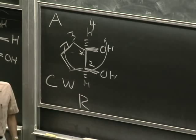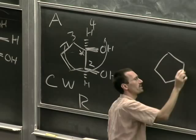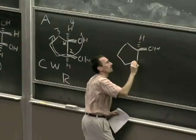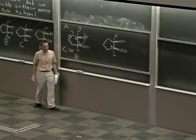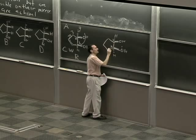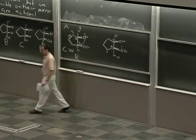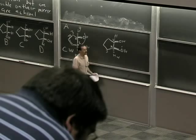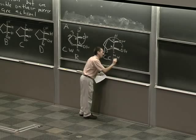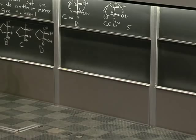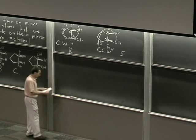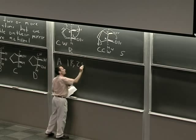Now for the other stereocenter: one for the oxygen, two for this carbon, three for this carbon, four for the hydrogen. We're sighting down the bond to the hydrogen — going 1, 2, 3 is counterclockwise, so this is S. That sets us up to assign compound A as 1R, 2S-1,2-cyclopentanediol.